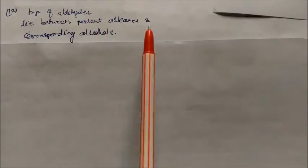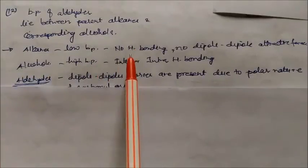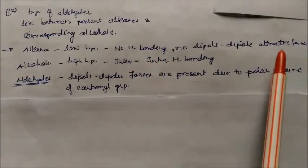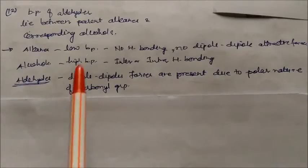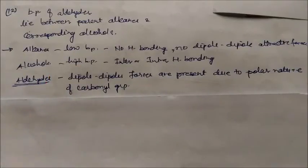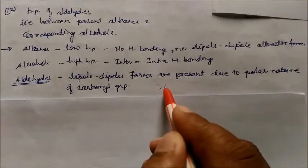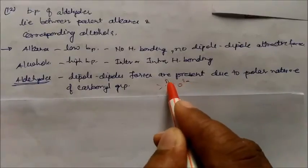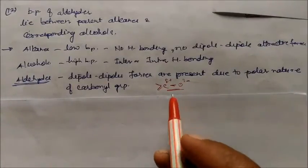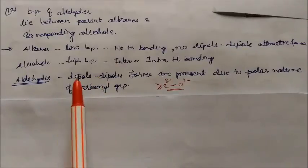The boiling point of aldehydes lies between that of parent alkanes and the corresponding alcohols. Alkanes have low boiling points because they have no hydrogen bonding and no significant dipole-dipole forces. Alcohols have high boiling points due to intermolecular hydrogen bonding. Aldehydes have no hydrogen bonding, but they do have dipole-dipole attractive forces due to the polar nature of the carbonyl group (δ⁻ on oxygen, δ⁺ on carbon). So their boiling points are higher than alkanes but lower than alcohols.